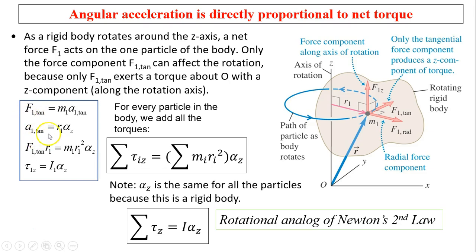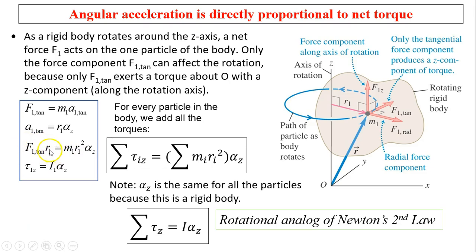Since tangential acceleration is related to rotational acceleration by the relationship a_tangential equals R times alpha — that's what we learned in Chapter 9 — we can substitute: F_tangential equals M1 times R1 times alpha_z, because a_tangential equals R1 times alpha_z. If we multiply R1 on both sides, F_tangential times R1 — why multiply by R1? Because tangential force times the lever arm gives you the torque.